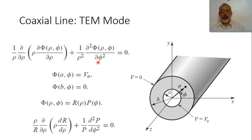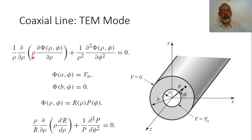Note that φ here is the potential function, while this φ is a coordinate of the cylindrical coordinates — they are different. Also note that this ρ cannot be eliminated directly with the other ρ, because we are going to take the differentiation of the entire function ρ(∂φ/∂ρ) with respect to ρ, and after differentiation divide by ρ.